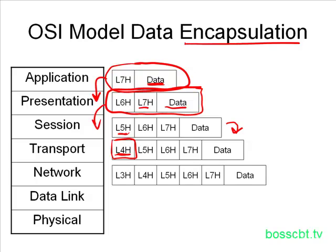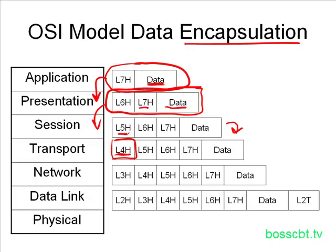This keeps going down to the network layer and the data link layer. Something unique happens at the data link layer: not only is a layer 2 header put on, but a layer 2 trailer is added as well. The data link layer is the only layer that adds both a header and a trailer; all other layers only add headers. So the layer 2 PDU is unique in that it has a header and a trailer.